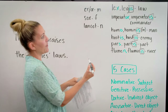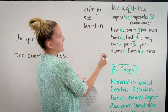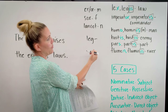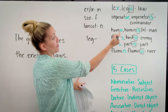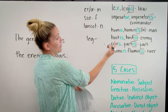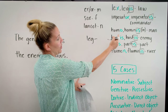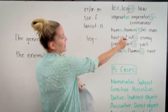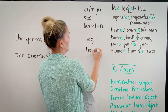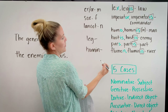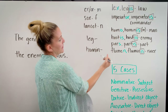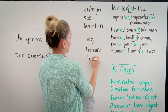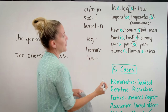My stem for 'lex, legis' would be L-E-G, and then I would put the appropriate ending on. For 'imperator, imperatoris,' the stem would be 'imperator-.' For 'homo, hominis,' it would be 'homin-.' For 'hostis, hostis,' the stem would be 'host-,' etc.